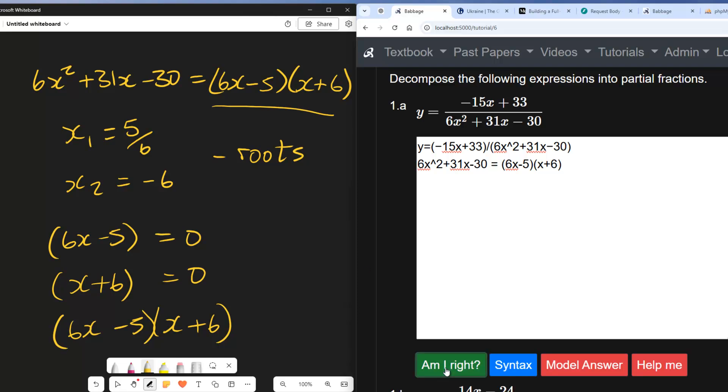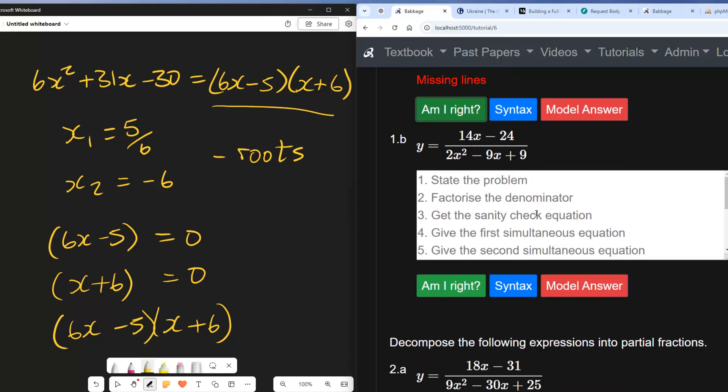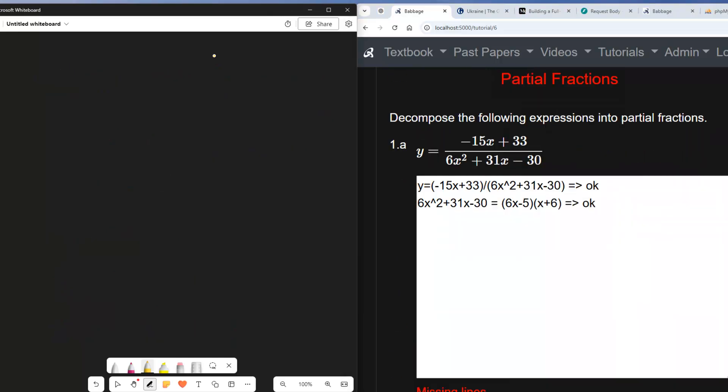And am I right so far? So far so good. Now the next thing we need to do, let's just have a quick look down here, is get the sanity check equation. Now we factorize the denominator, we can say that y is equal to A over the first factor, which was 6x - 5, plus B over the second factor, which was x + 6.